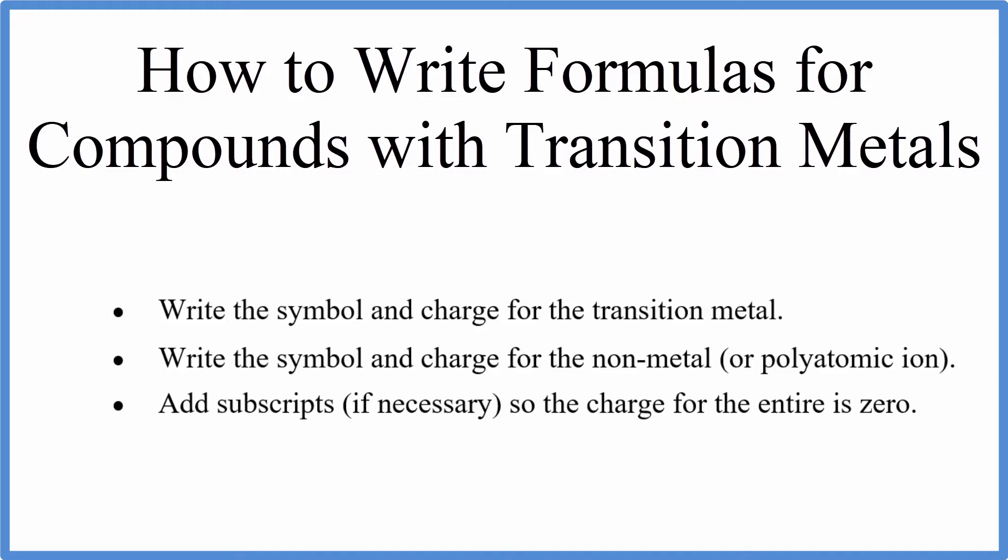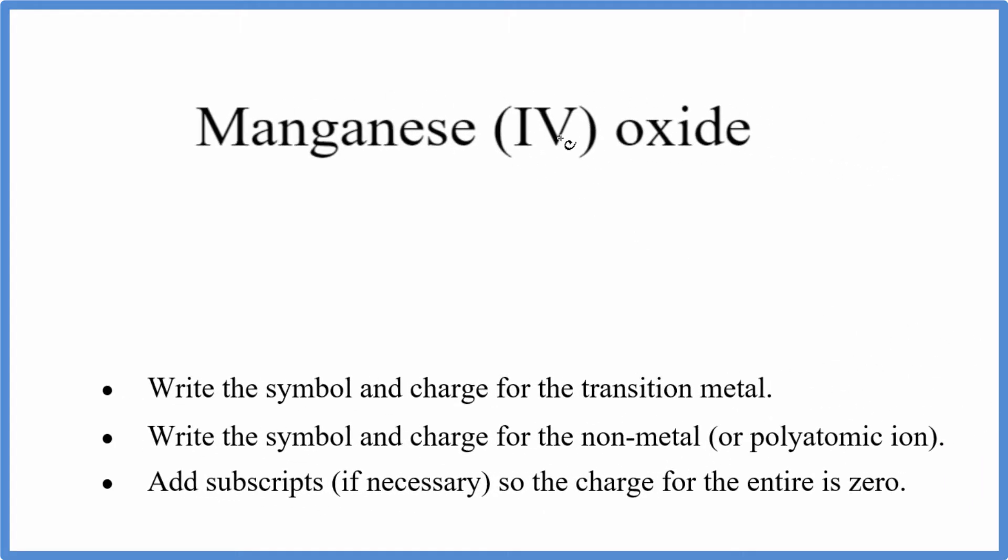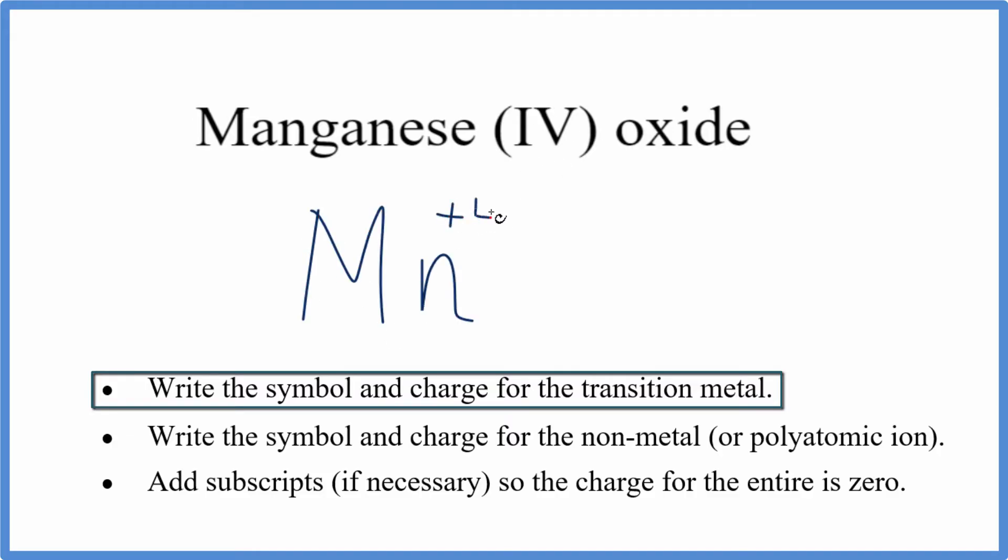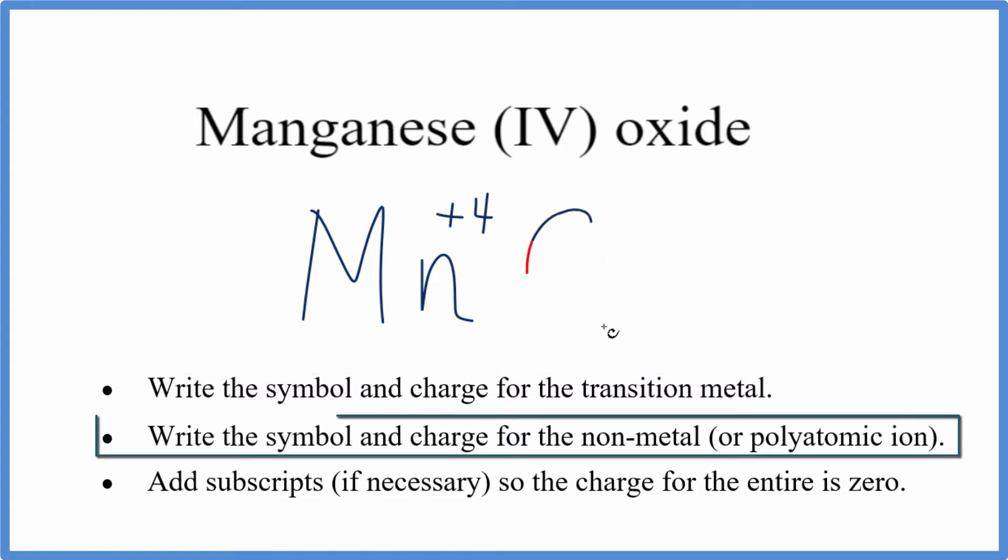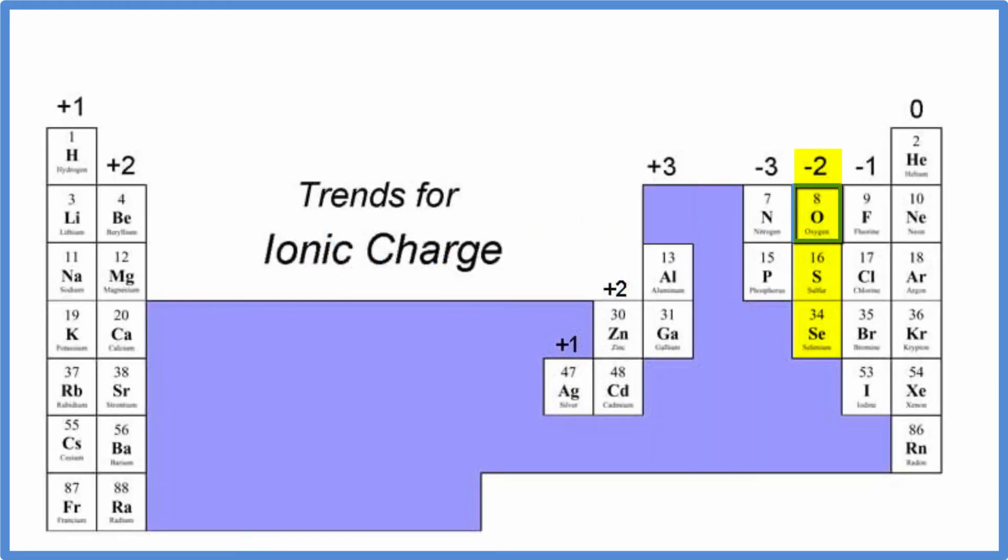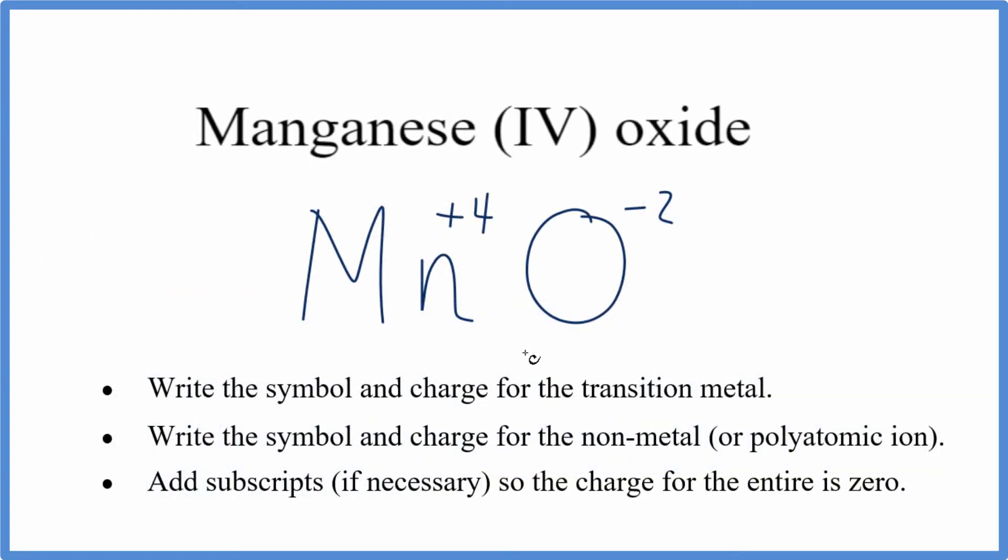So let's get started with manganese (IV) oxide. For manganese (IV) oxide, this is the Roman numeral for 4, we know that manganese is going to be a transition metal because we have a Roman numeral here. So we look up manganese, that's Mn, and it has a charge of plus 4. Oxide, that's oxygen, so we write O. And oxygen, we go to the periodic table again, and we see that the group that oxygen's in, those are all minus 2. So oxygen, minus 2 charge. Our net charge is not 0, so we need to change the subscripts, these little numbers here, in order to get our net charge balanced, to be 0. If I had two oxygen atoms, and each one was minus 2, that would give me a negative 4, and that would balance this out. So I'll put a subscript of 2 here. 2 times minus 2, that's minus 4. Plus 4, they cancel out. And that makes the formula for manganese (IV) oxide, MnO2.